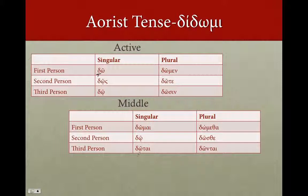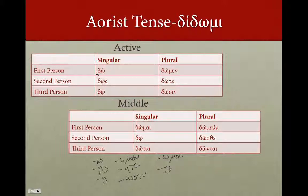Recognizing the subjunctive should be pretty straightforward. It's a little more challenging to have to conjugate it, but that's seldom asked for when you're dealing with ancient Greek. So remember those endings — long o, ace, e, omen, ete, osin — or in the middle: omei, a, ete, omei, oeste, ontai. And then just watch what stem those are added to, and that will tell you whether it's a present or an aorist.